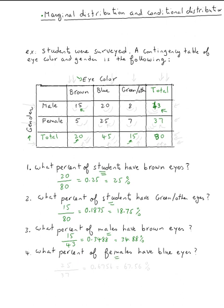Next question: what percent of females have blue eyes? The number of females goes in the denominator — we have 37 females, so 37 is the denominator. How many females have blue eyes? 25. So it's 25 over 37, which is 0.6756, or 67.56%.